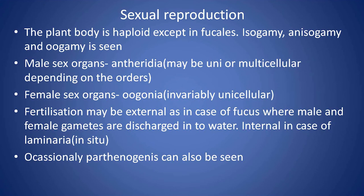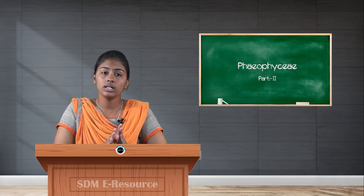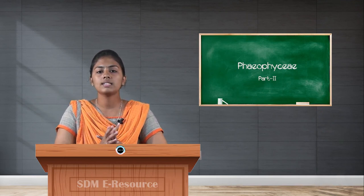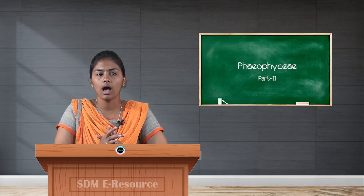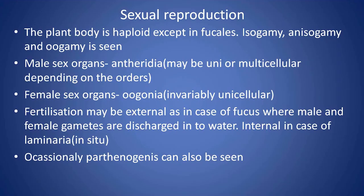Coming to sexual reproduction: the plant body is haploid except in a few cases. Hence in the gametophytic generation of Phaeophyceae, all three types — isogamy, anisogamy, and oogamy — can be found. Male sex organs, the antheridia, may be unicellular or multicellular depending upon the order. Female sex organs, the oogonia, are invariably unicellular in all cases.